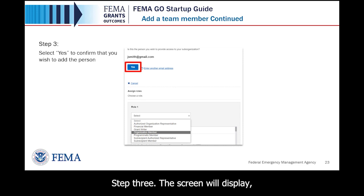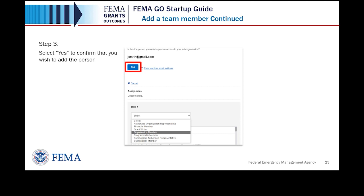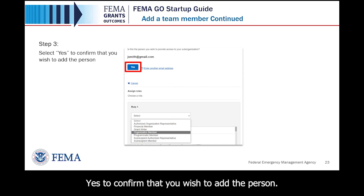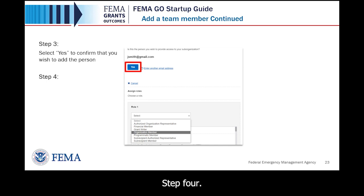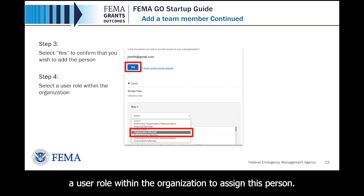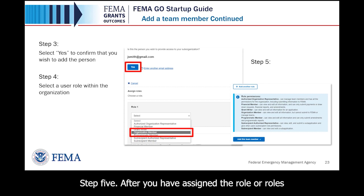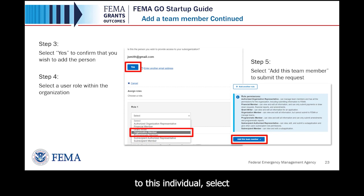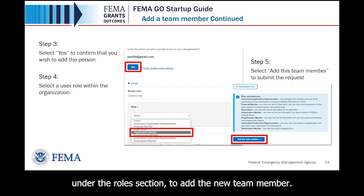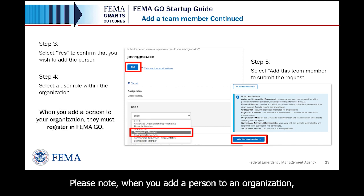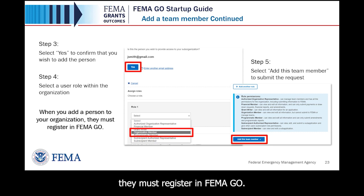Step 3: the screen will display 'Is this the person you wish to provide access to your organization or sub-organization?' If correct, select Yes to confirm. Step 4: open the dropdown menu and select a user role to assign this person — for example, Organization Member. Step 5: after assigning the role or roles, select the Add This Team Member button found under the Roles section. Step 6: when you add a person to an organization, they must register in FEMA GO and will receive an email stating they need to register.